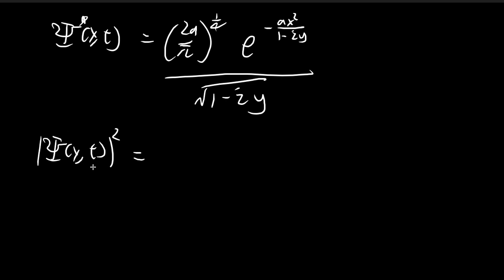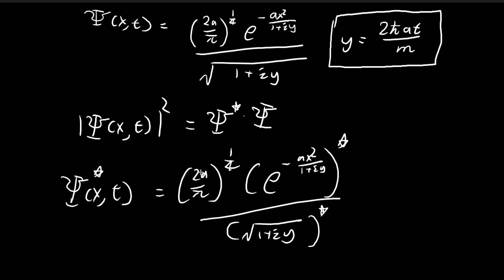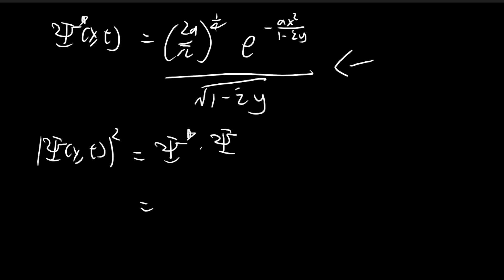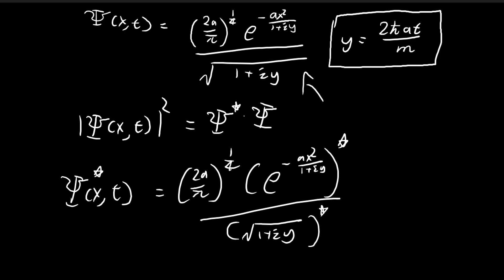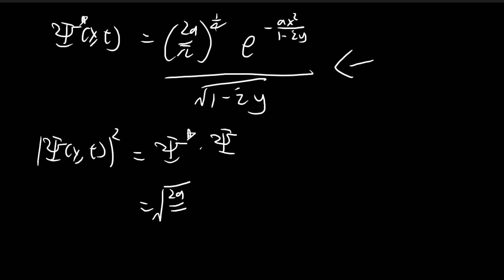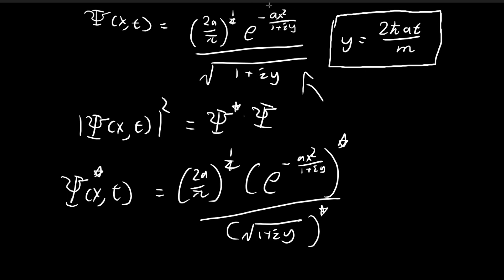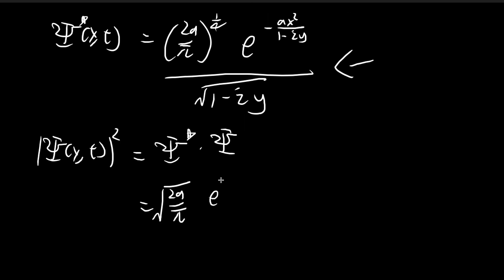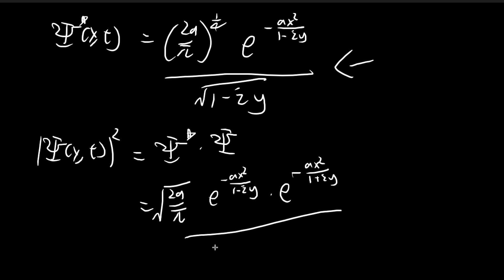The absolute value squared is the probability density function — it tells you where you will find your particle. This equals the conjugate times the wave function itself. Grouping constants gives 2√(2a/π), and the e terms combine as e^(−ax² / (1−iy)) times e^(−ax² / (1+iy)), with denominator √(1+iy) · √(1−iy).